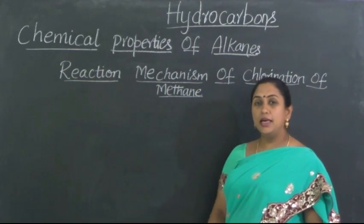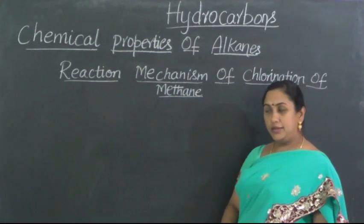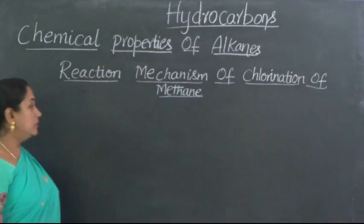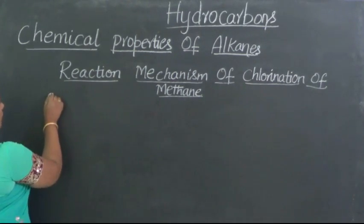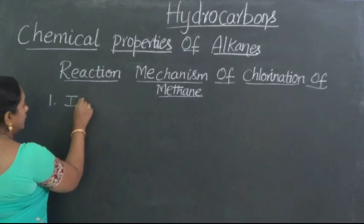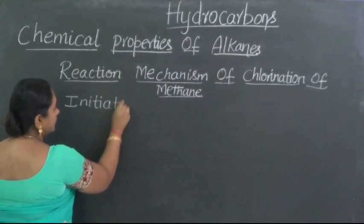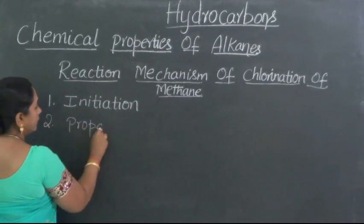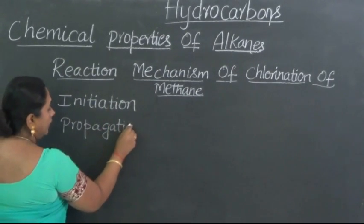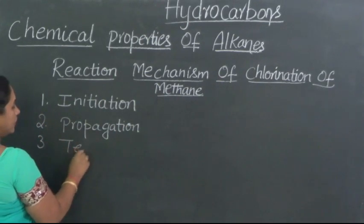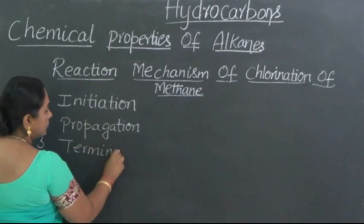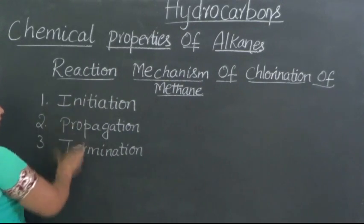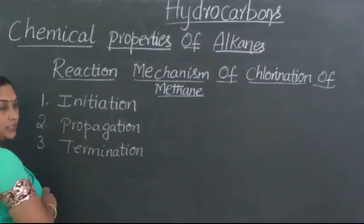In case of a reaction mechanism, it gives us a detailed step-by-step phenomenon of how exactly the reaction starts and proceeds to completion. All the details are revealed in a detailed manner. Now, let us take up the example of chlorination of methane reaction mechanism. This involves three steps, namely: initiation, propagation, and termination.